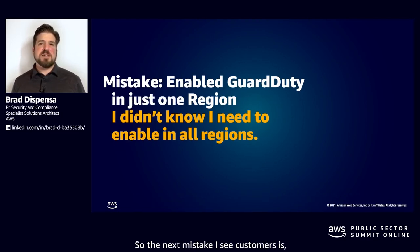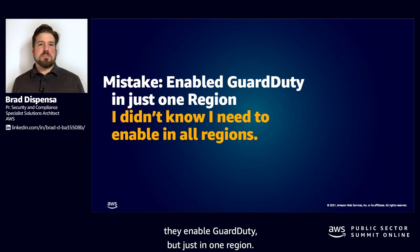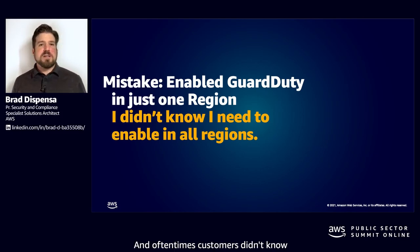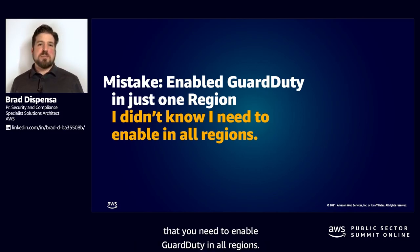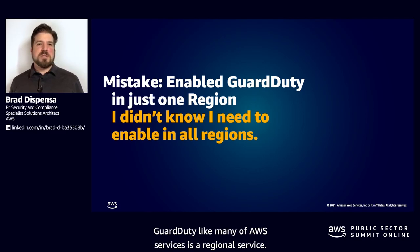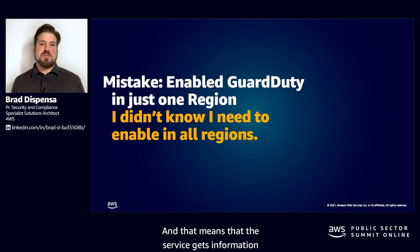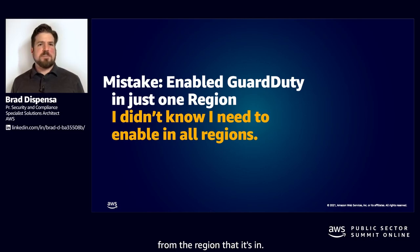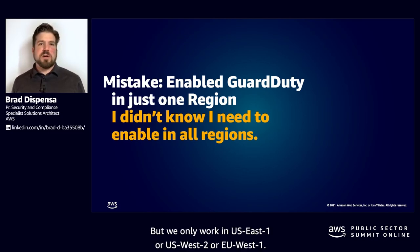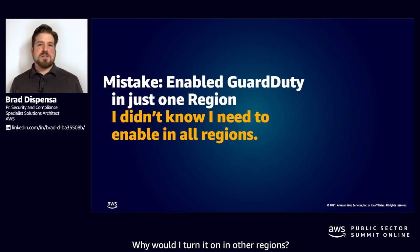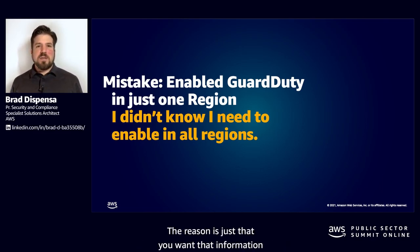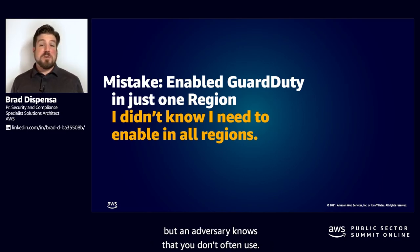The next mistake I see customers make is they enable GuardDuty but just in one region. Customers often didn't know they need to enable GuardDuty in all regions. GuardDuty, like many AWS services, is a regional service — it gets information from the region that it's in. But customers ask: we only work in US East 1 or US West 2 or EU West 1, why would I turn it on in other regions? The reason is that you want that information to come to you in regions that maybe you don't often use, but an adversary knows that you don't often use.